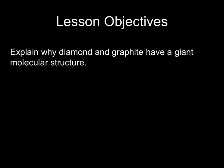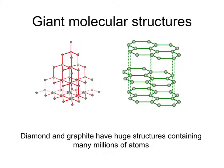First, the specification says you must be able to explain why diamond and graphite have got giant molecular structures. And whenever we see a picture of diamond on the left or graphite on the right, the fact that they have giant molecular structures isn't obvious. But what we have to realise is that these go on for many millions of atoms in all directions.